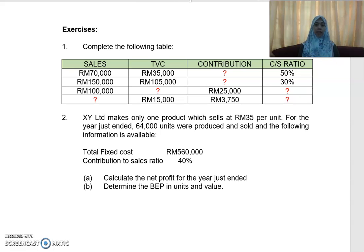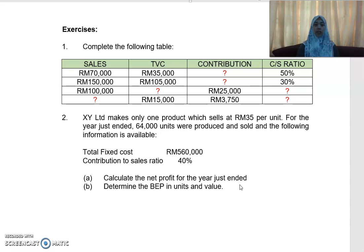The second question is: XY Limited makes only one product which sells at RM35 per unit. For the year just ended, 64,000 units were produced and sold. The following information is available: total fixed cost of RM560,000 and a CS ratio of 40%. You are required to calculate the net profit for the year just ended, and for part B, determine the break-even point in units and value.